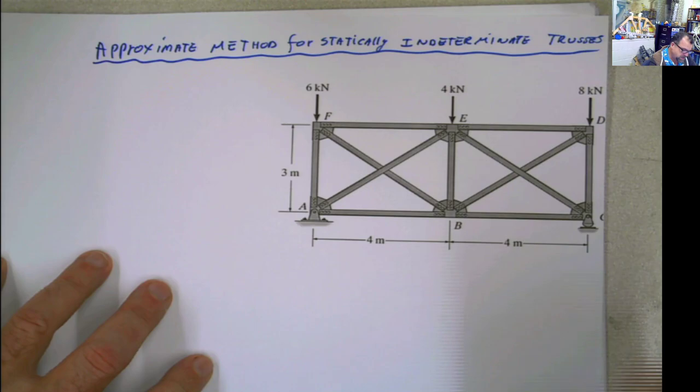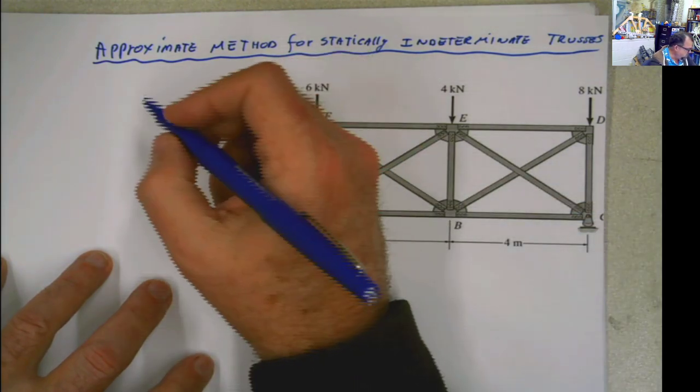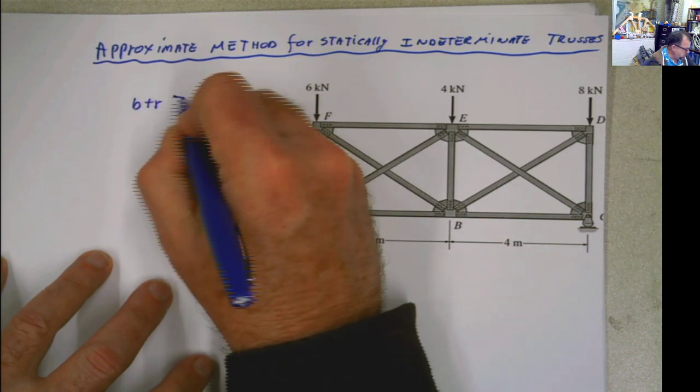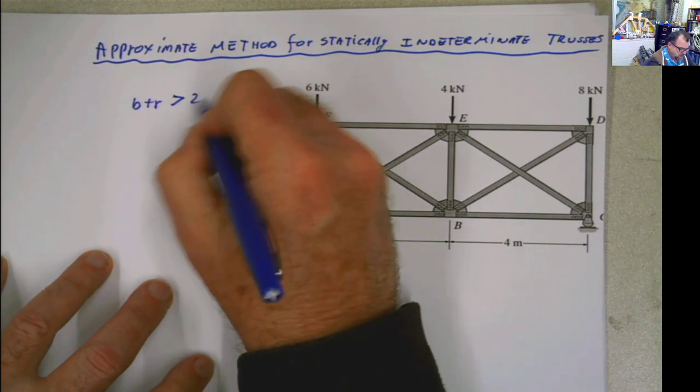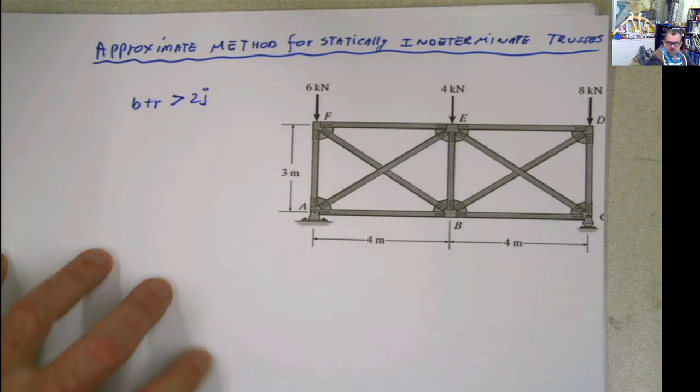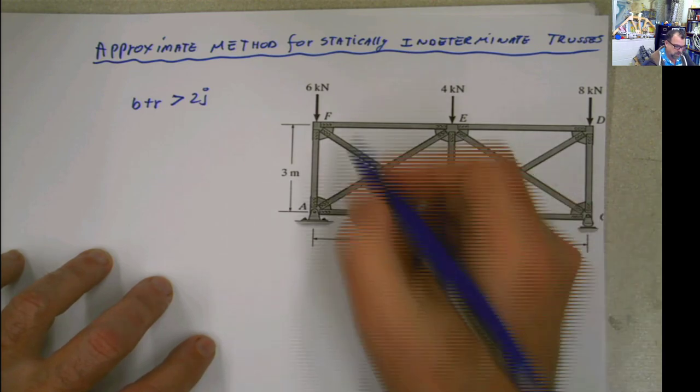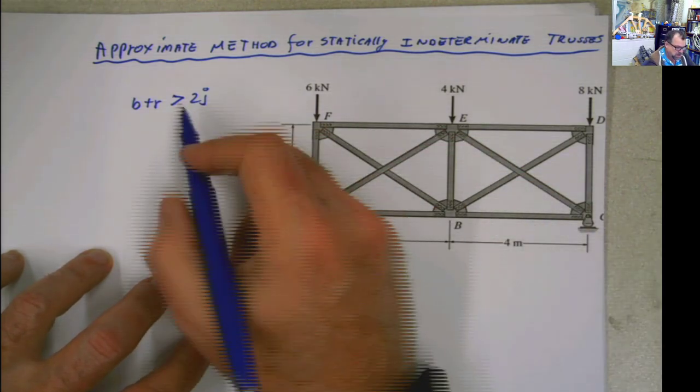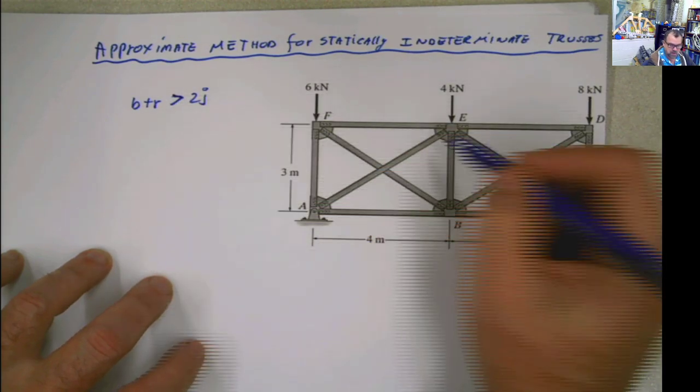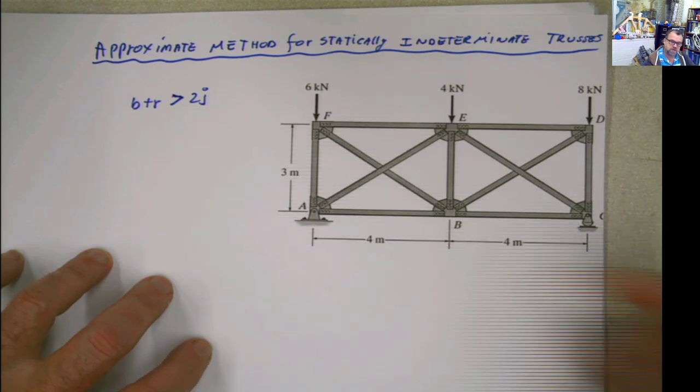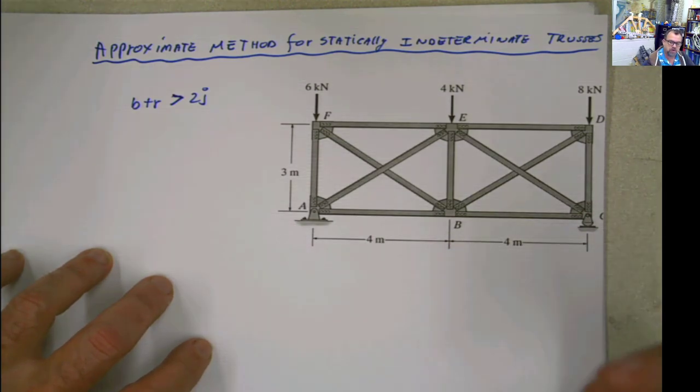First, you have to realize if this is statically determinate or indeterminate. And remember, we have for 2D one equation. And basically, this is just the number of bars plus the number of reactions, which are your unknowns here, one internal force per bar plus the external reactions. If it's bigger than two times the number of joints, why two times the number of joints? Because every single joint, you can do summation of forces in x and y, meaning you have two equations for that. If this happens, it's statically indeterminate.